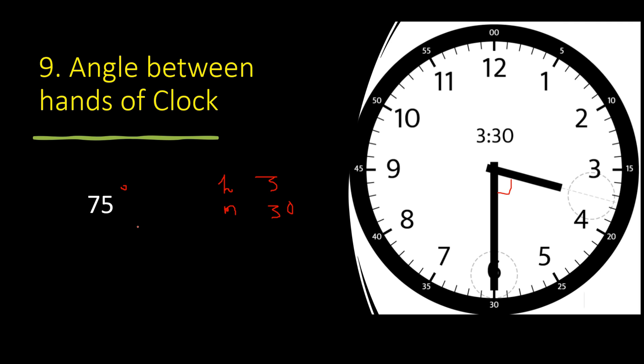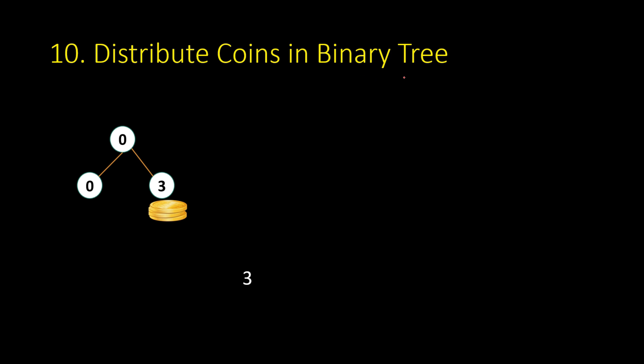Now let's see the last problem: distribute coins in a binary tree. You have a binary tree - in this case the tree has three nodes, so you will have a total of three coins. Some nodes will have zero coins, some will have more coins, but the total value of all coins will be equal to the number of nodes in the binary tree. The problem is that one coin has to be placed on each node.